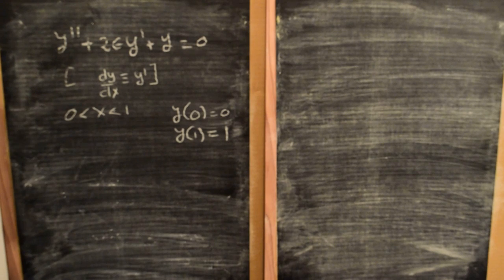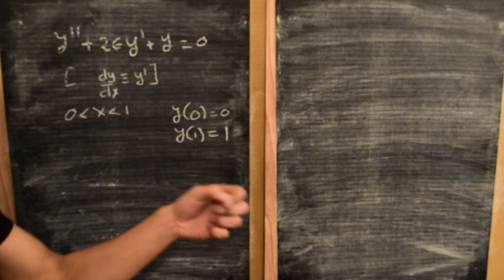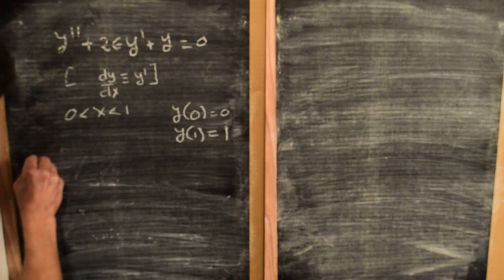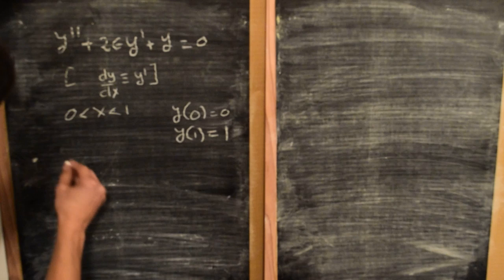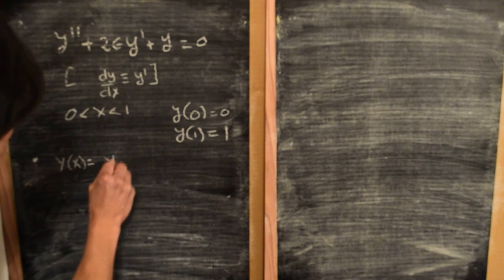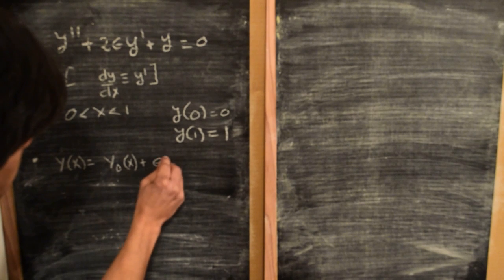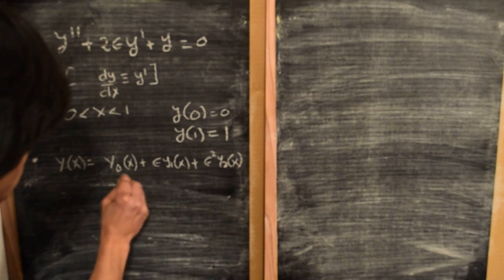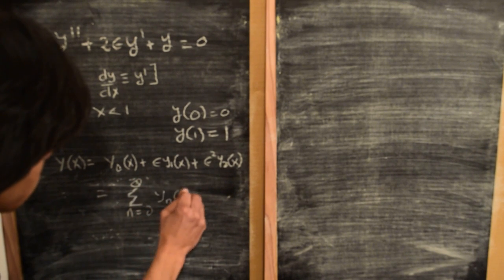How do we go about solving this using regular perturbation? If you want to review why this equation falls in the class of regular perturbation, I'll put a link to the previous video. The basic steps: first, we assume the solution y can be expanded as a power series in powers of epsilon. We write y(x) = y₀(x) + ε·y₁(x) + ε²·y₂(x) + ..., or equivalently as the summation from n=0 to infinity of yₙ(x)·εⁿ.